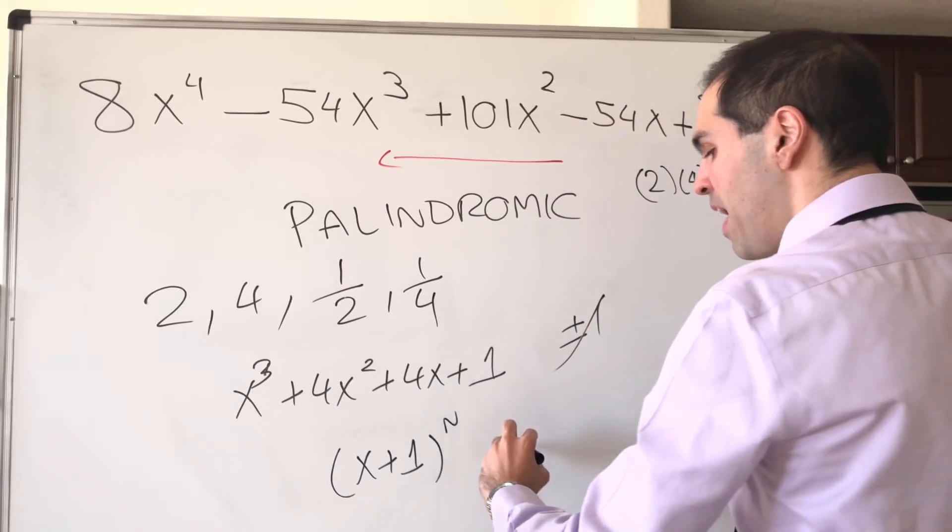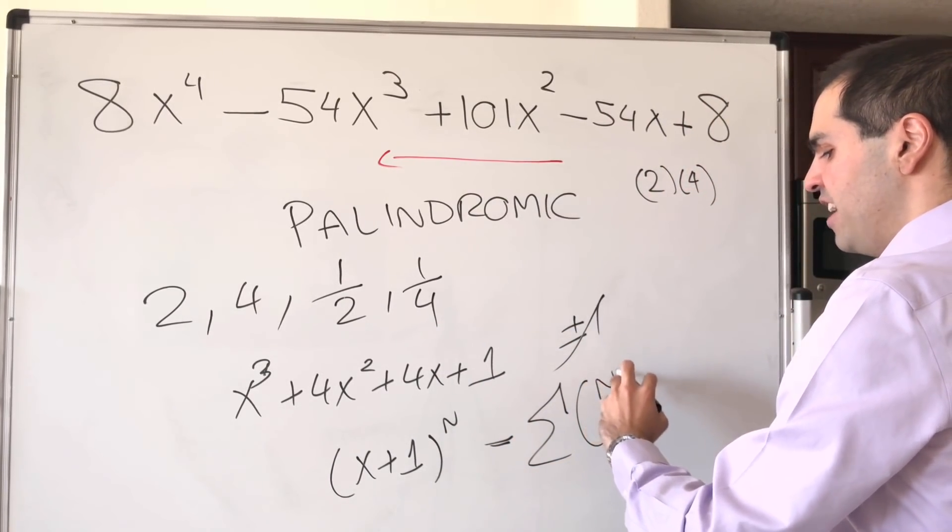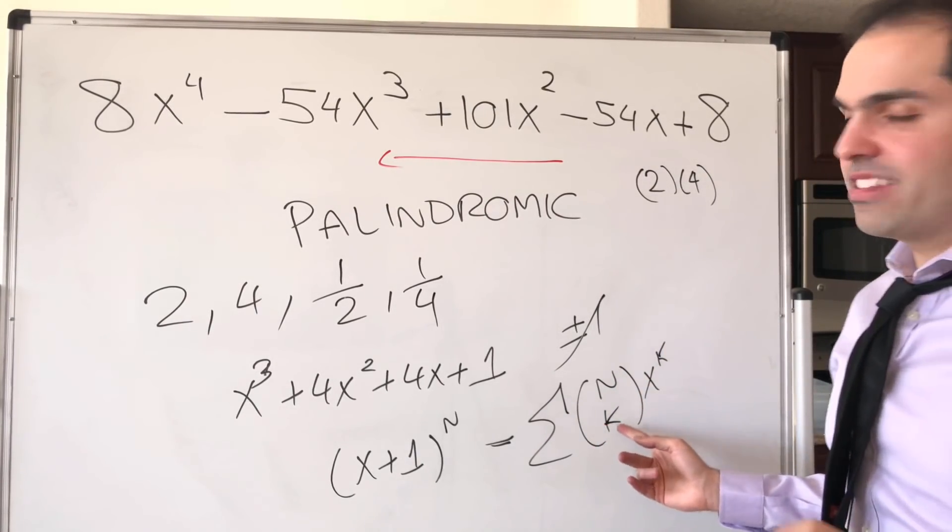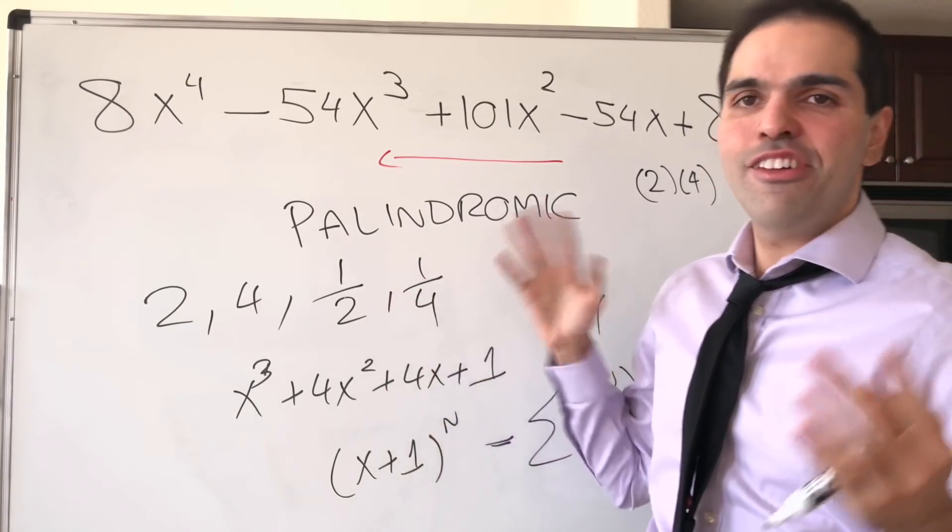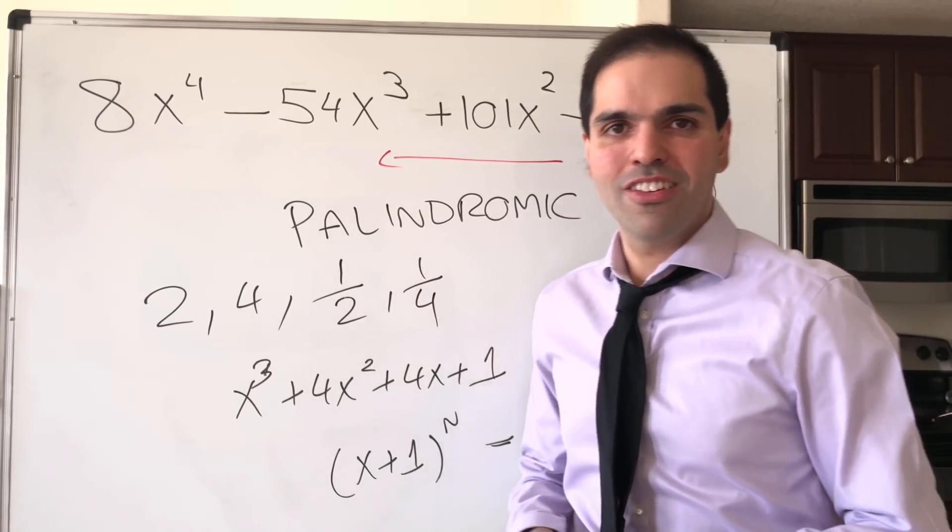And the reason it is palindromic is because of the binomial expansion. It's just n choose k, x to the k. And by Pascal's triangle, you can actually show that it's pretty symmetric. So they're very, very neat because of this property and also other ones.